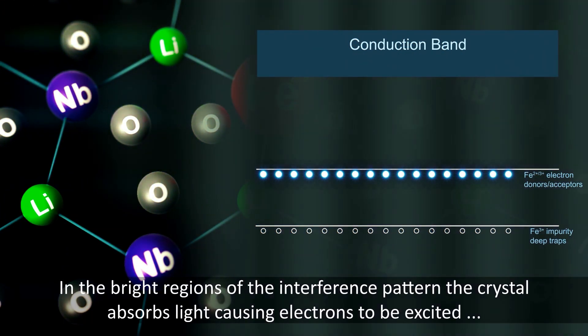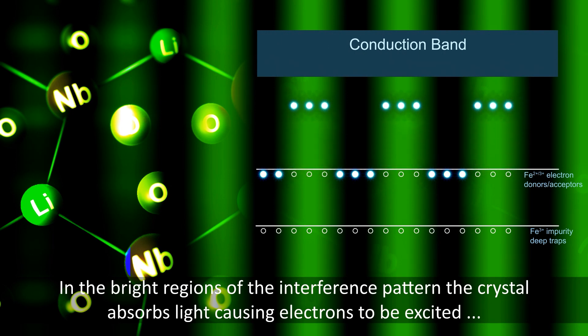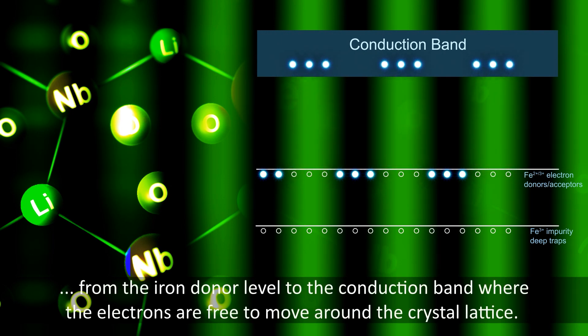In the bright regions of the interference pattern the crystal absorbs light causing electrons to be excited from the iron donor level to the conduction band where the electrons are free to move around the crystal lattice.